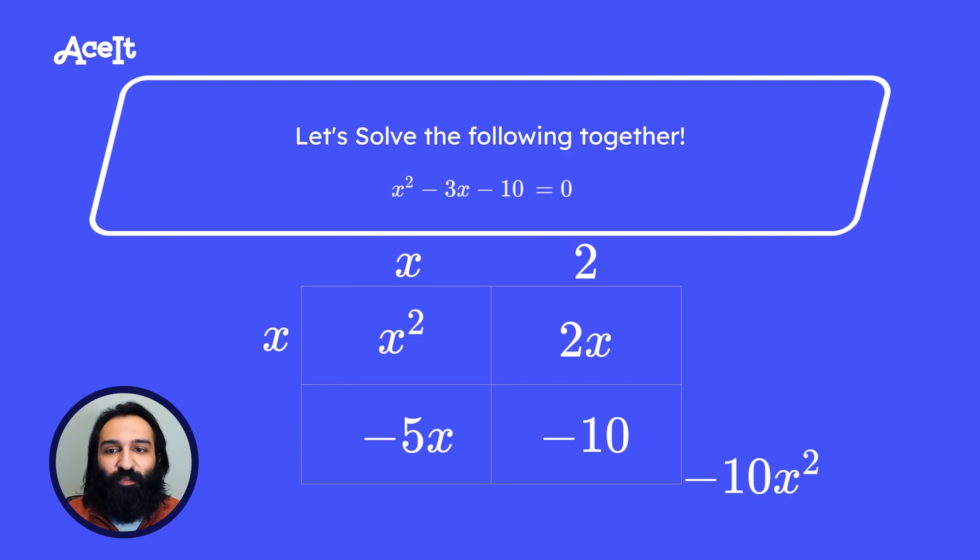There's only one left term for us to figure out. What times x will give you negative 5x. Well that's just negative 5. We can double check our work by multiplying the terms we factored out with their corresponding lineup. So in the first box x times x is x squared. Then we have x times 2 which is 2x. We then have negative 5 times x which is negative 5x and finally negative 5 times 2 which is negative 10. We can now write out our factor terms like this.